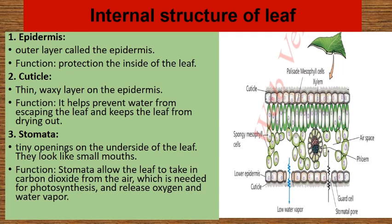5. Veins — like the leaf's transportation system, similar to the veins in your body, but they carry water and nutrients instead of blood. Veins are made up of xylem and phloem vessels. Xylem vessels carry water and minerals from the roots up to the rest of the leaf. Phloem vessels transport the food and sugars made in the leaf to other parts of the plant that need it.